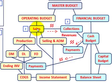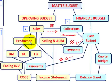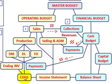Under our operating budget, we have our sales budget, which splits into our production budget and our selling and administration budget. Under our production budgets, we have direct material, direct labor, and factory overhead budgets, and those all go into the ending inventory budget. The ending inventory budget, along with all our other amounts, goes into our cost of goods sold budget, which flows into the income statement.